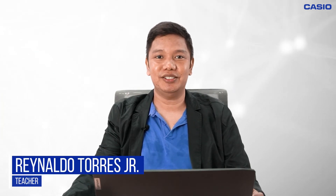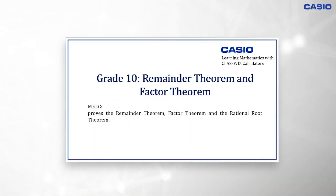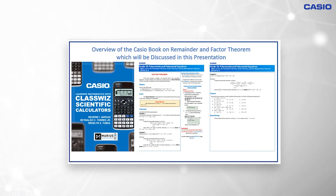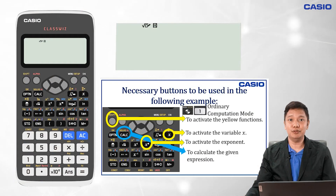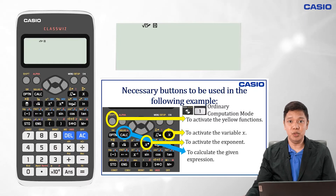Good day teachers and learners! I am Teacher Tony, a junior high school mathematics teacher. In this video we will explore how we can use the Casio ClassWiz calculator in learning and teaching the Remainder Theorem and Factor Theorem. The examples and steps discussed are also indicated in the Casio book on remainder and factor theorems. The Casio emulator is a great tool for teachers to simulate and process learning and computation in class. We will be exploring Menu 1, Calculate Mode.